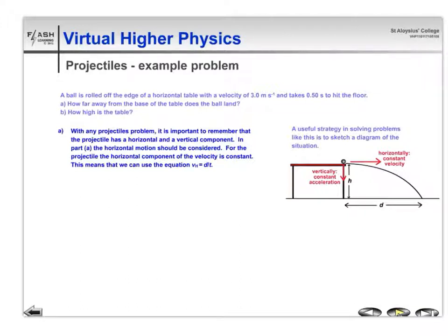We've got to always be clear about whether we're dealing with a horizontal or a vertical component at any particular point in time. In this first bit, you're asked about how far away from the base of the table. That's distance d. It's a horizontal distance.